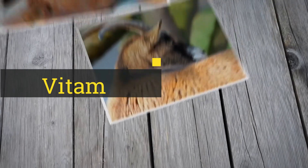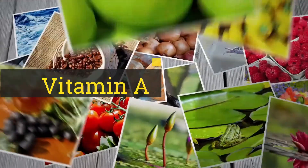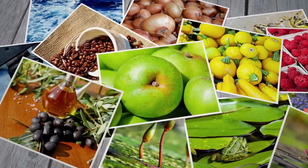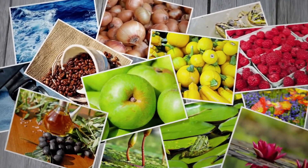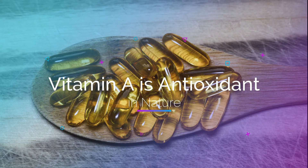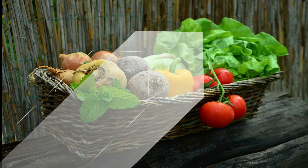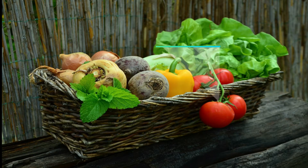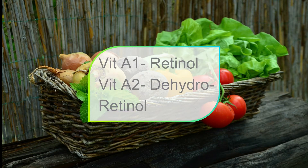First, we will discuss Vitamin A. It maintains general health and vigor of epithelial cells, and is essential for formation of light-sensitive pigments in photoreceptors of the retina. Beta-carotene is the provitamin of Vitamin A, naturally found in vegetables, and acts as an antioxidant. Other names include Retinol and Anti-infective Vitamin. Vitamin A exists in two forms: in animal food as retinol, and in vegetables as beta-carotene. Vitamin A1 is retinol and Vitamin A2 is dihydroretinol.